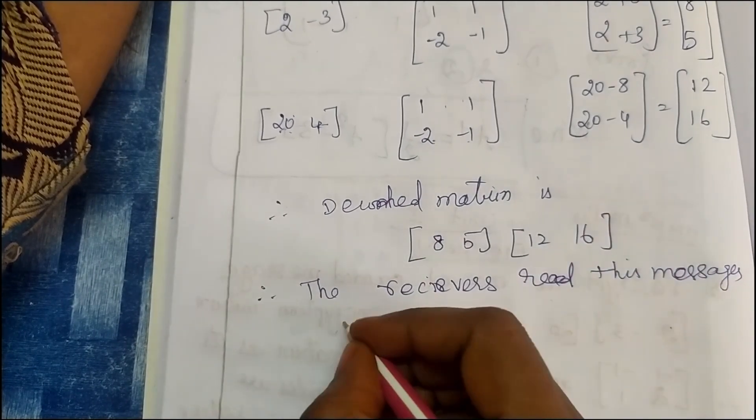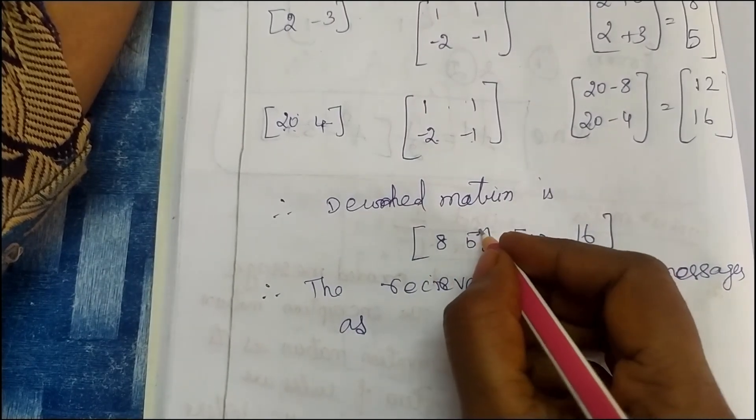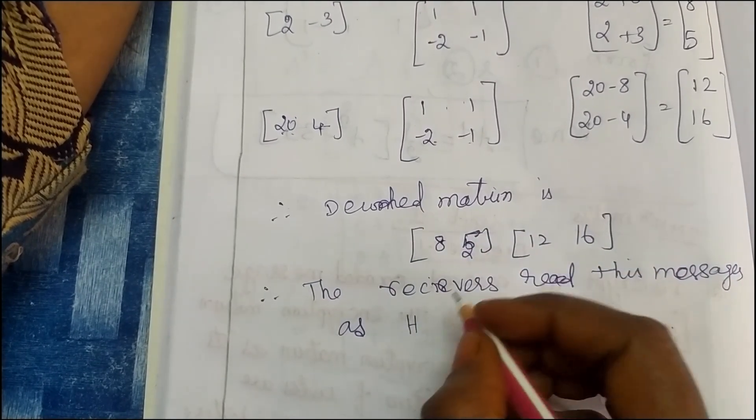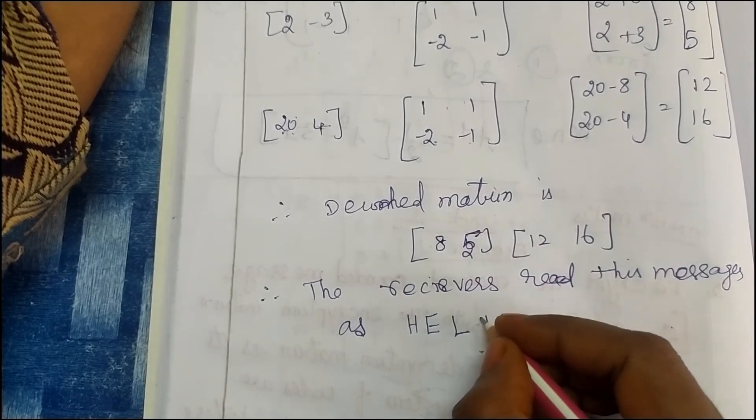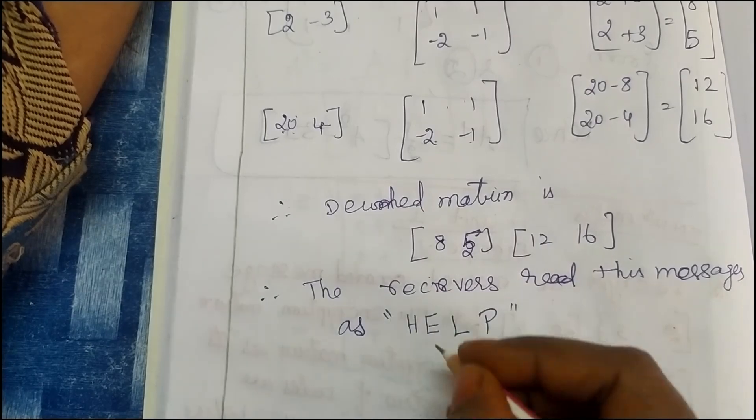So the answer is: A, B, C, D, E, F, G, H is 8, E is 5, K, L is 12, P is 16. So the answer is HELP.